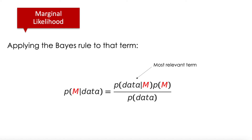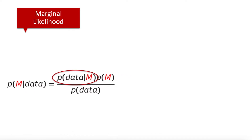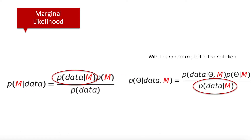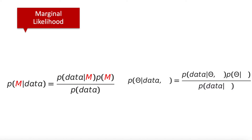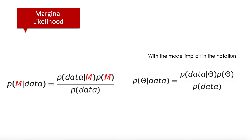This is the most relevant term in this calculation. Remember that in the equation of our posterior, when we explicitly add the model into the notation, we have that equation, and you can see that this term is exactly the denominator of our posterior for our parameters theta. In general, we don't use m in our notation, so if m doesn't exist, our equation becomes exactly as we wrote it at the beginning — that's why these two terms are exactly the same.